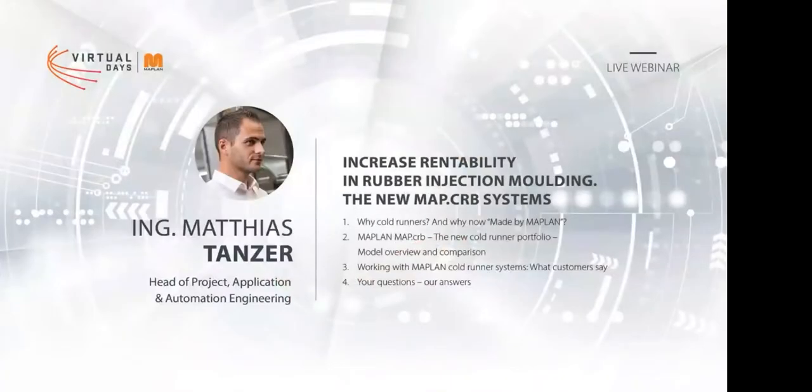My name is Matthias Danzer. I'm at the company Maplan since 2015. I started in the mechanical design department for the injection molding machines and moved over to the technical sales support a few years ago. Now I'm responsible at Maplan for the project engineering, for the application engineering, for the automation department and also for the MAP-CAB systems.